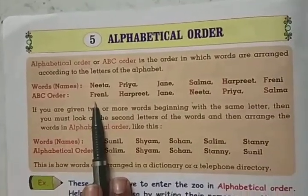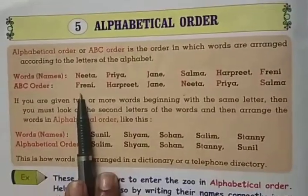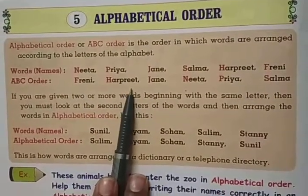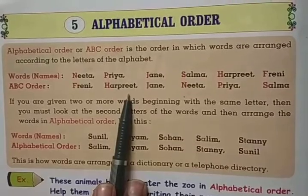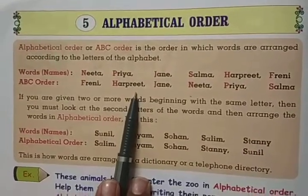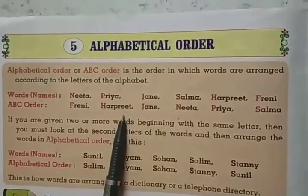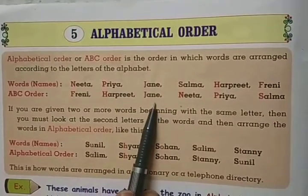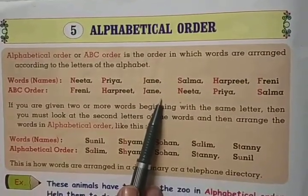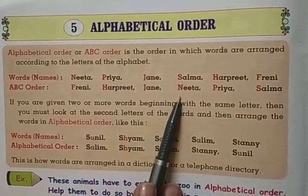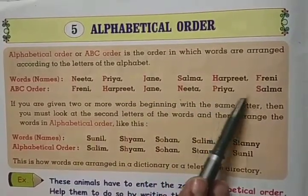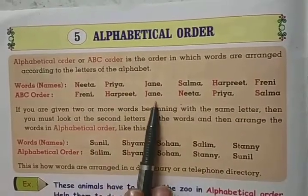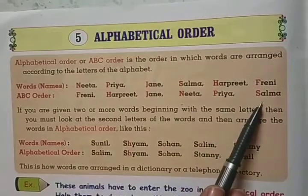Then after F, which letter is coming? F, G, H — G has no name, so H — Harpreet. Then after H: I — no letter. J — Jen. K, L, M — not there. Then N — Nita. Then P — Priya, and S — Salma. So the alphabetical order is: Franny, Harpreet, Jen, Nita, Priya, Salma.